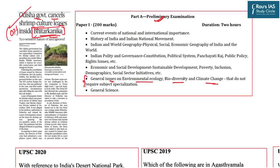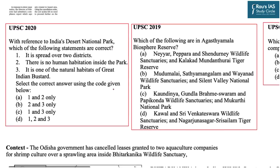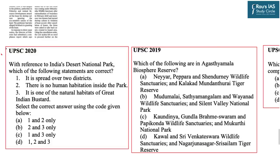Bhitarkanika is a wildlife sanctuary as well as a national park. Going by previous year question paper analysis of prelims, almost every year there are more than two questions specifically asked from wildlife sanctuaries, national parks, or biosphere reserves. For example, in UPSC 2020 a question was asked in the context of India's Desert National Park. Analyzing these questions, there are certain key features — like aerial spread, concept of the national park, and species located there — around which any question revolves.